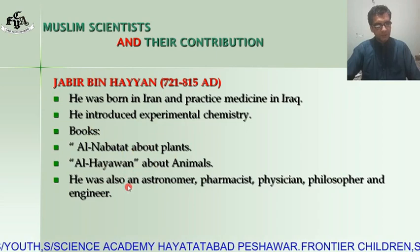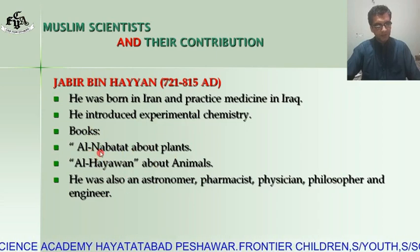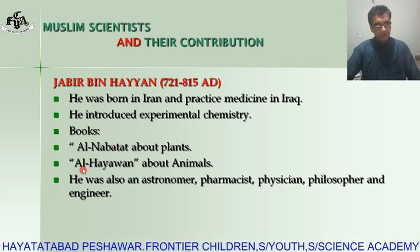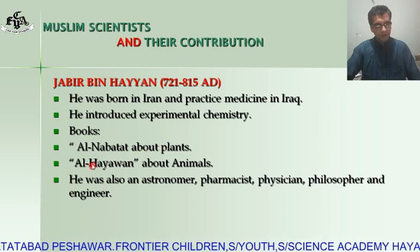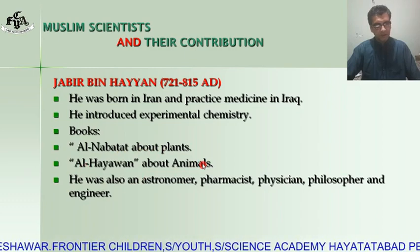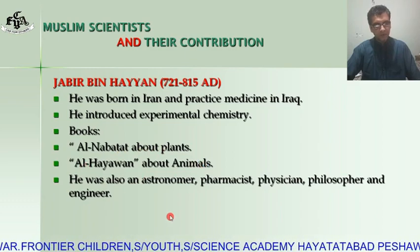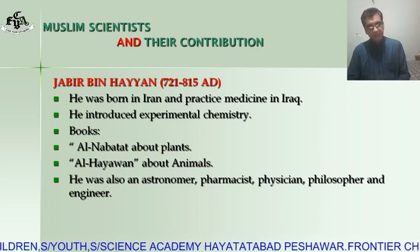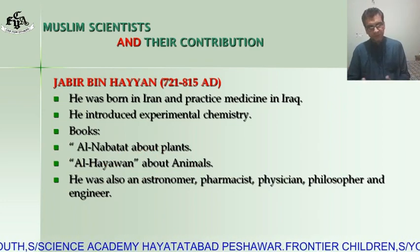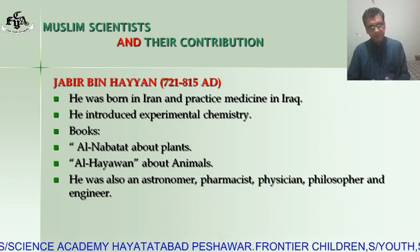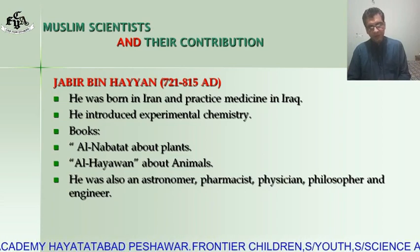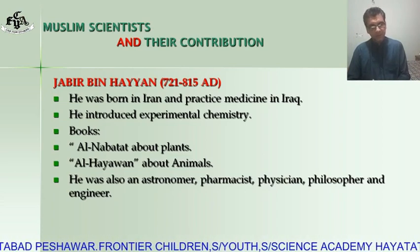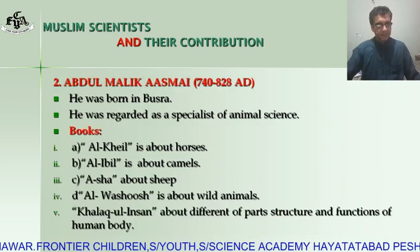There are two books of Jabir ibn Hayyan: Al-Nabata, which was about plants, and Al-Haywan, which was about animals. He was also an expert in pharmacy — also called a pharmacist — as well as a physician, philosopher, and engineer.